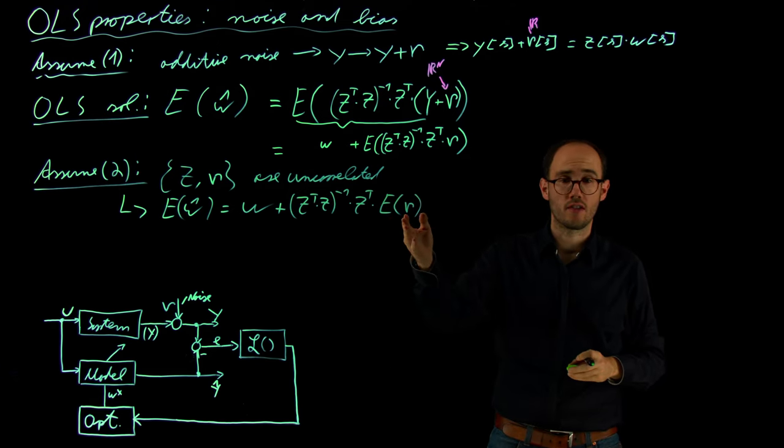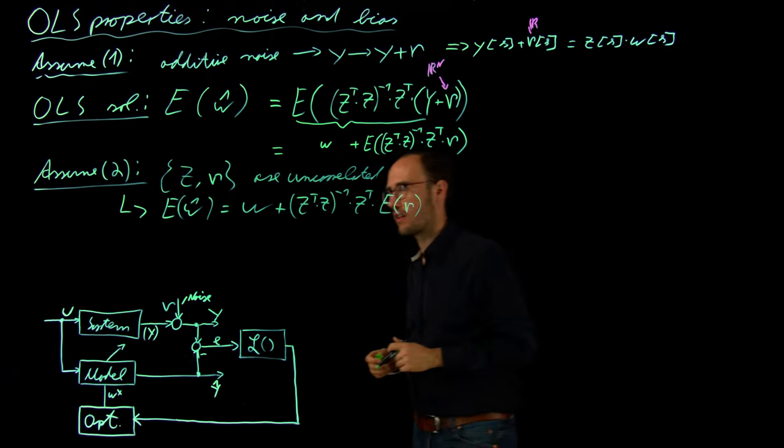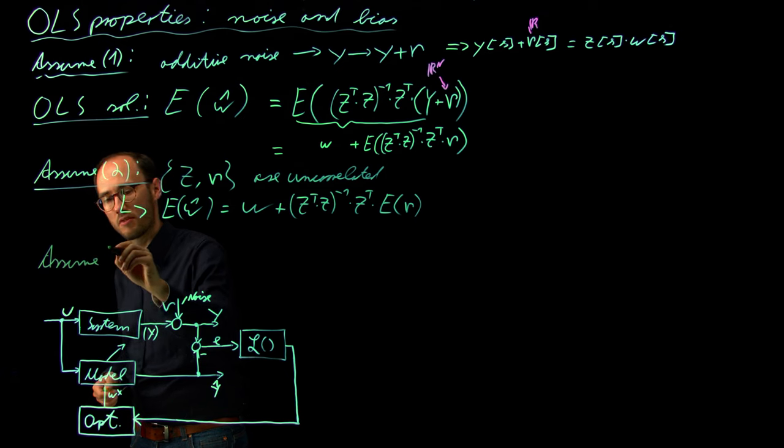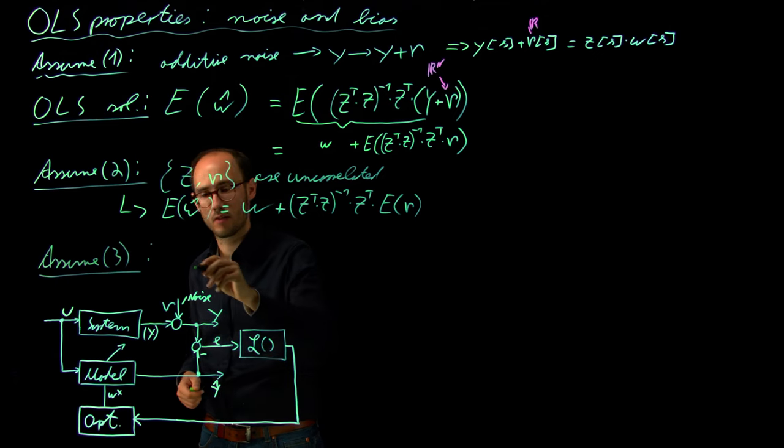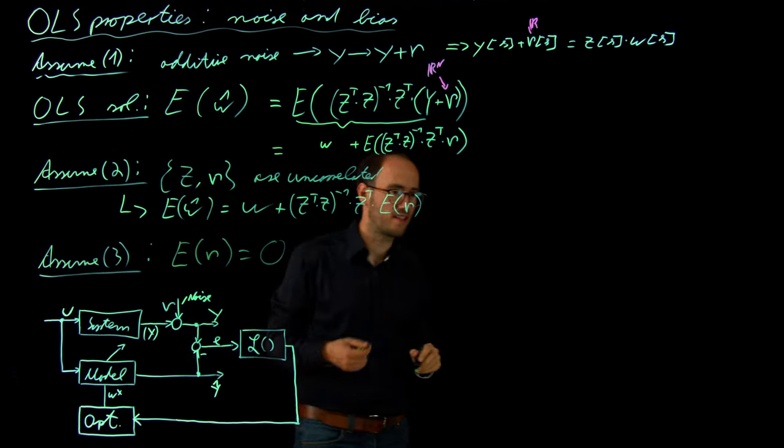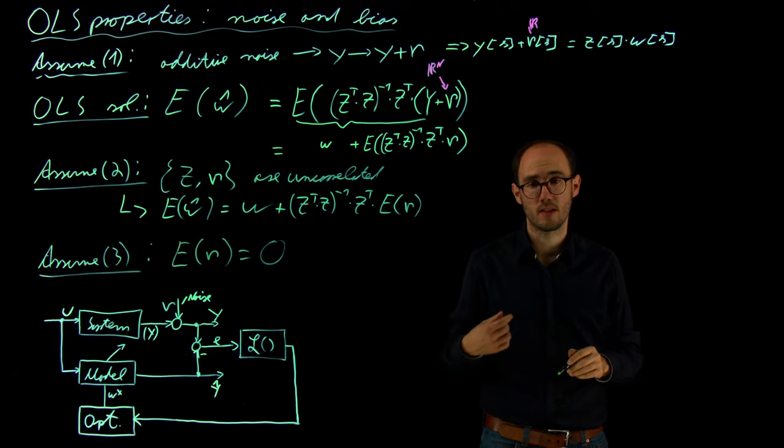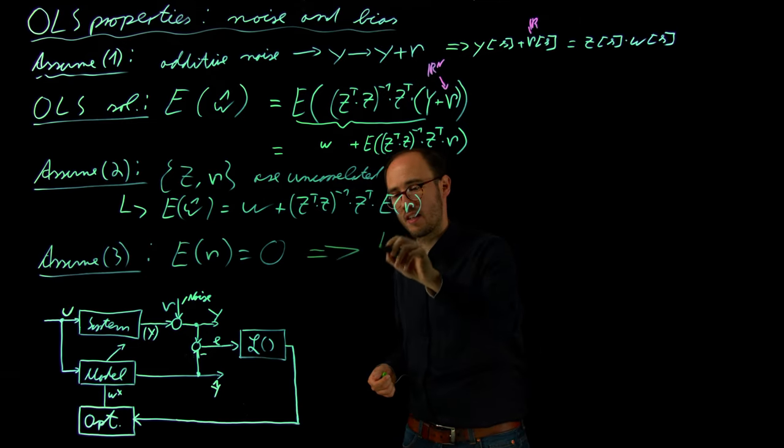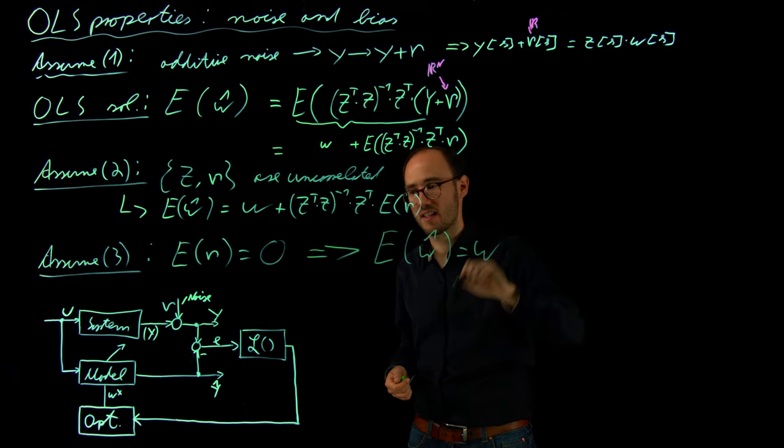Okay, expectation of Mu. Then the question is, do we have any bias in terms of the noise? And the standard assumption in the ordinary least squares literature, the third and last assumption of this video is actually no. We assume that this noise is bias free. So expectation of Nu is zero, so that the sensors which we read do not introduce any bias, but just a random noise which is mean free, which is bias free.